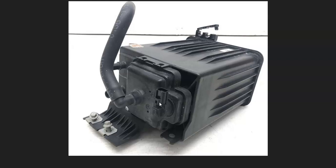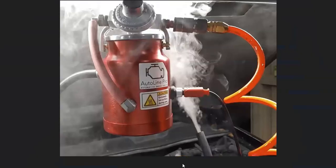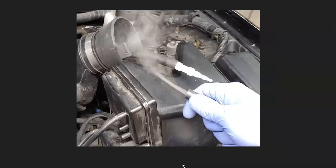If the gas cap and vent valve are both good, there's very likely a leak somewhere inside the system — in one of the hoses or components. To find it, a mechanic would typically use a smoke machine, feeding smoke into the EVAP system and watching where it comes out to pinpoint the leak.